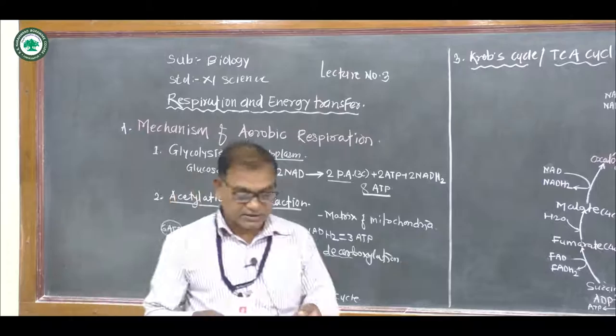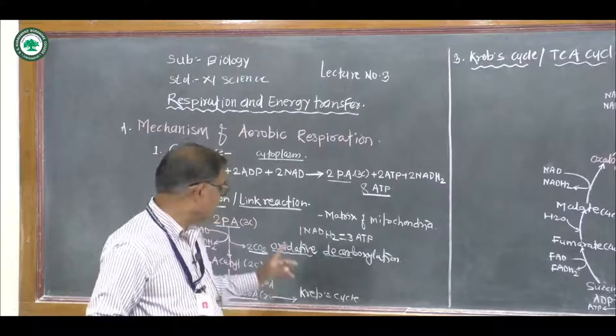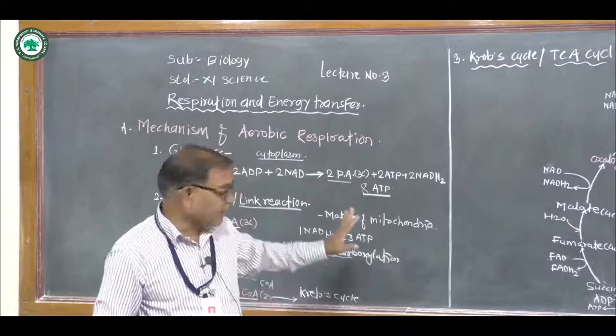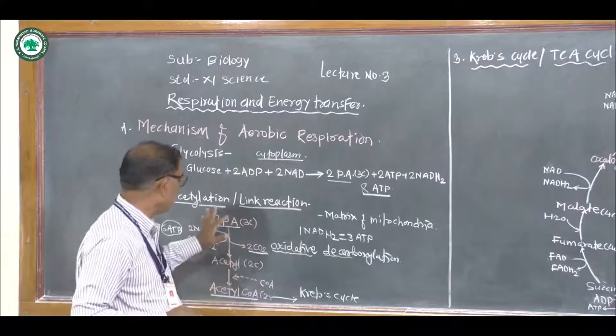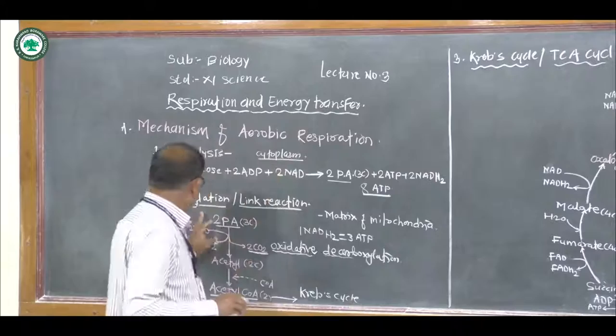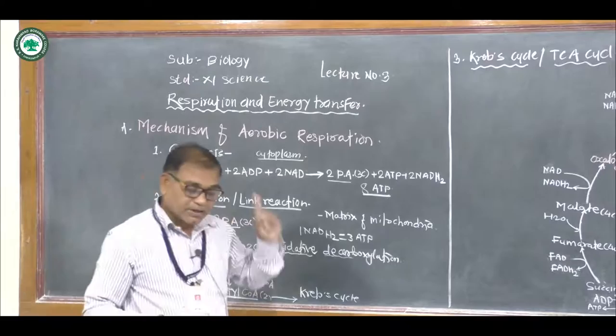Before the Krebs cycle, removal of carbon dioxide and a pair of hydrogen takes place, and pyruvic acid is further broken down to form acetyl coenzyme A — this is called oxidative decarboxylation. In the acetylation step, six molecules of ATP are generated through the electron transport system.